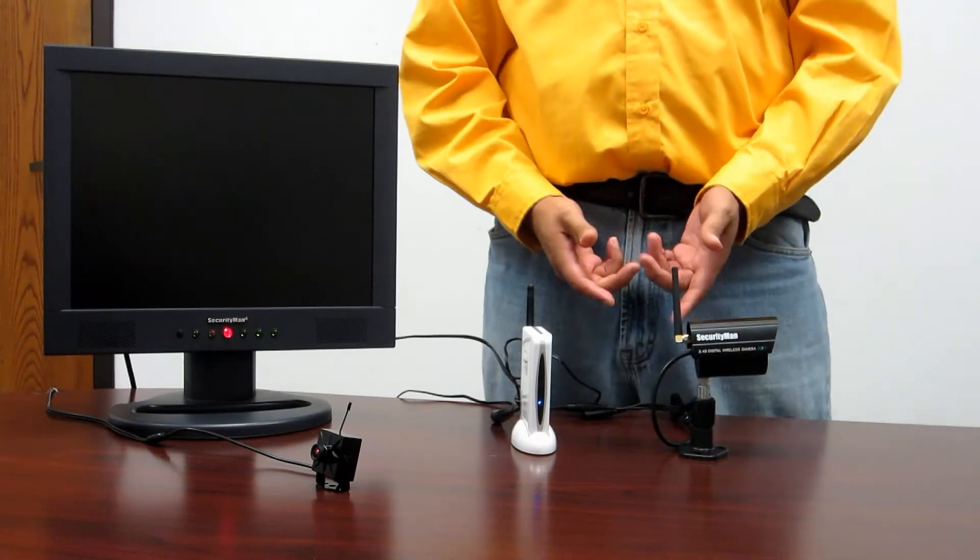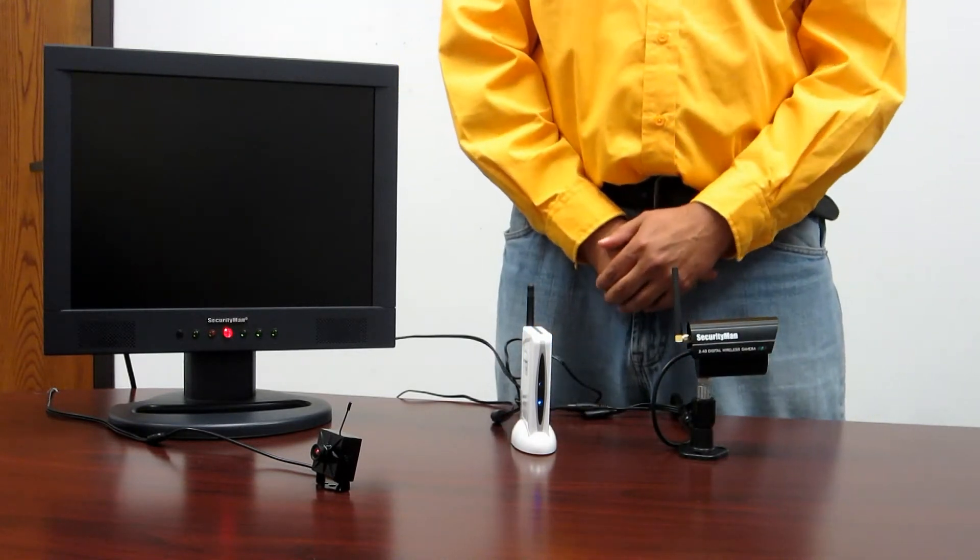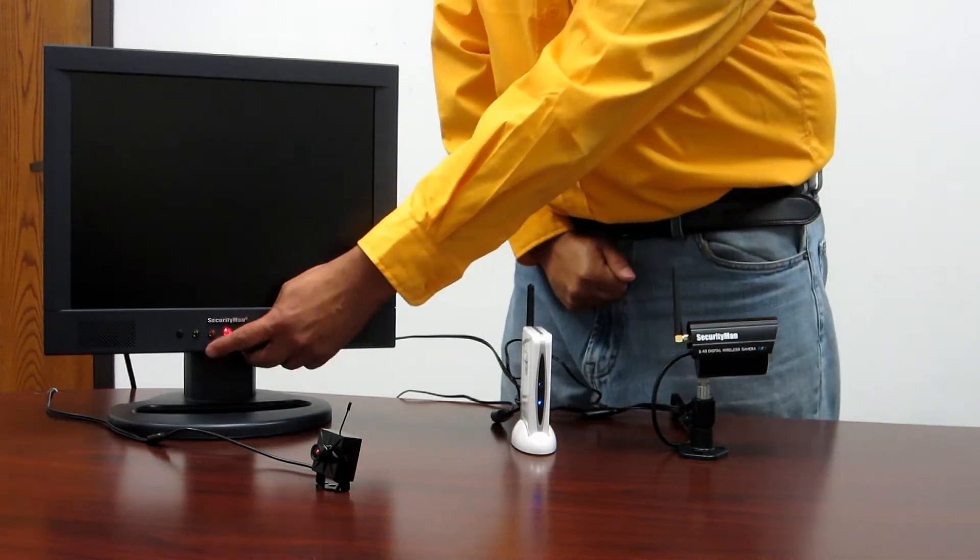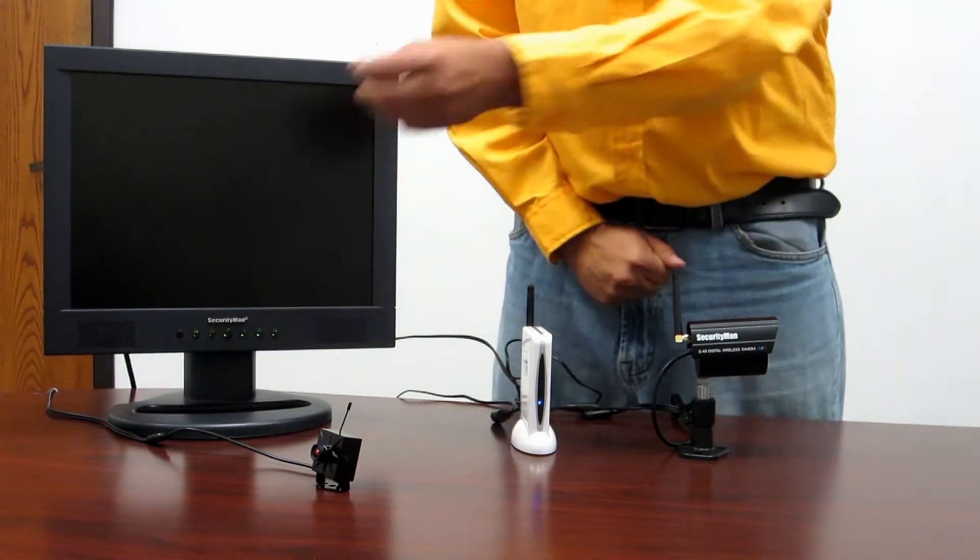The cameras included with your DIGI OutAir and DIGI MiniAir kits are already paired to your receiver on channel 1, so as soon as you turn the monitor on, you should get the image from your camera.